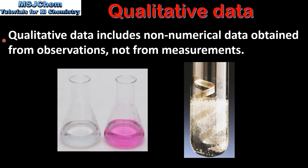Qualitative data includes non-numerical data obtained from observations, not from measurements. Examples of qualitative data include the color change of an acid-base indicator such as phenolphthalein, which changes color from colorless to pink. Another example is the formation of bubbles of gas in the reaction of magnesium and hydrochloric acid.